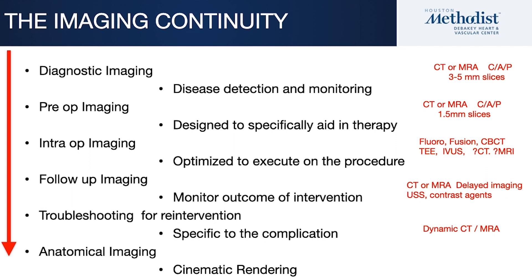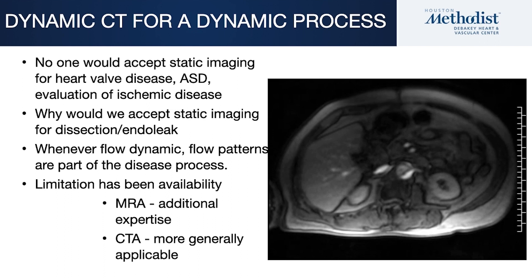We think of imaging in its continuity and it's obviously important to choose the right diagnostic tool at the right phase of the treatment modality. But CT is very flexible and it's really the workhorse. In the past we have been interested in dynamic MR, and here you can see an example of a dynamic obstruction of the left renal artery from a descending type B dissection.